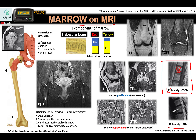In the T2 halo sign, you have a central hypo-intense lesion surrounded by a periphery of hyper-intense signal. The hyper-intense signal is suggestive of active disease or presence of edema. Hence, this is a bad sign.